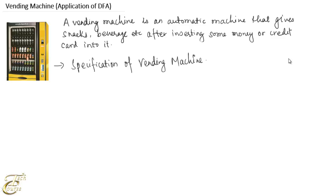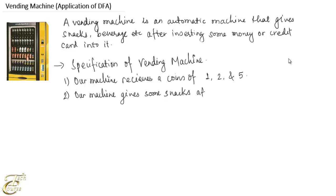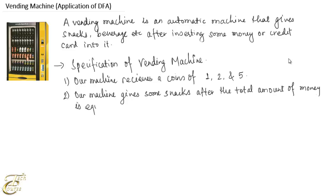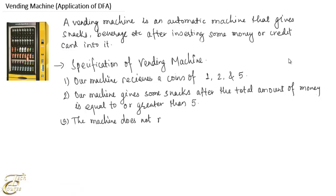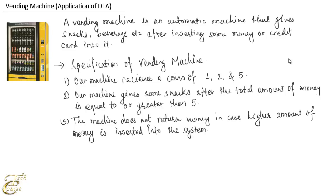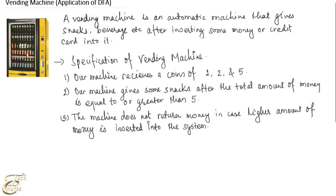Here we design a simple automatic vending machine. Assumption one: our machine receives coins of 1, 2, and 5. Assumption two: our machine gives snacks after the total amount of money is equal to or greater than 5. Assumption three: the machine does not return money in case a higher amount of money is inserted into the system. You can design a machine that returns money for higher amounts, but that model is a bit more complex. For simplicity, we design this simple type of vending machine.